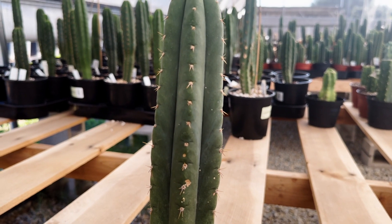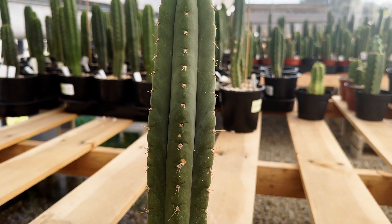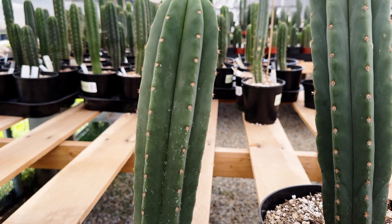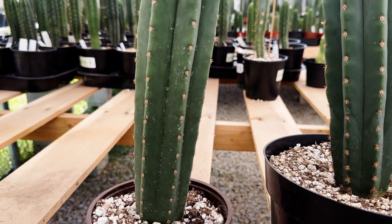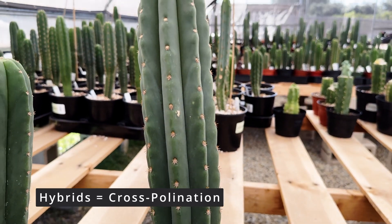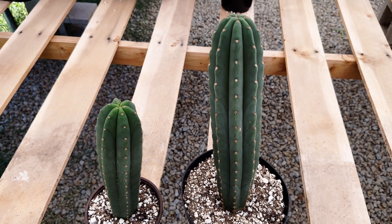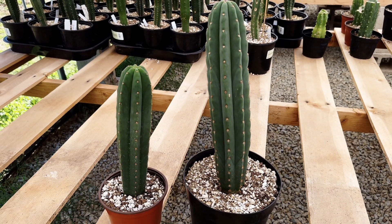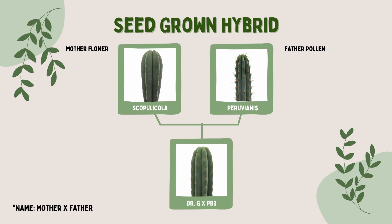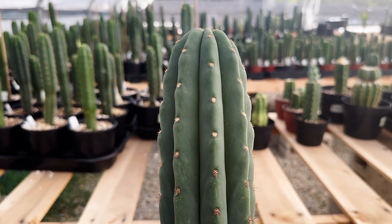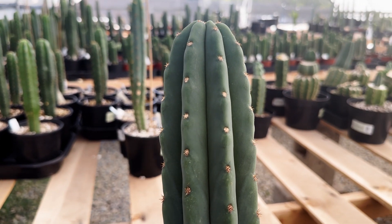The Yowie is a named cultivar that was brought to Australia by a man named Harry Blossfeld. Whereas named cultivars are propagated through clonal cuttings, certain species of the Trichocereus genus can form hybrids with other cultivars within the same species, genus, and sometimes even intergenus. This cross-pollination leads to the formation of hybrid seeds, growing into unique offspring with a mixture of traits. For example, the Dr. Green Thumbs PB3 is a Trichocereus scapulicola and Trichocereus peruvianus hybrid, with the short spines of the scapulicola and the blue-toned epidermis from the peruvianus.